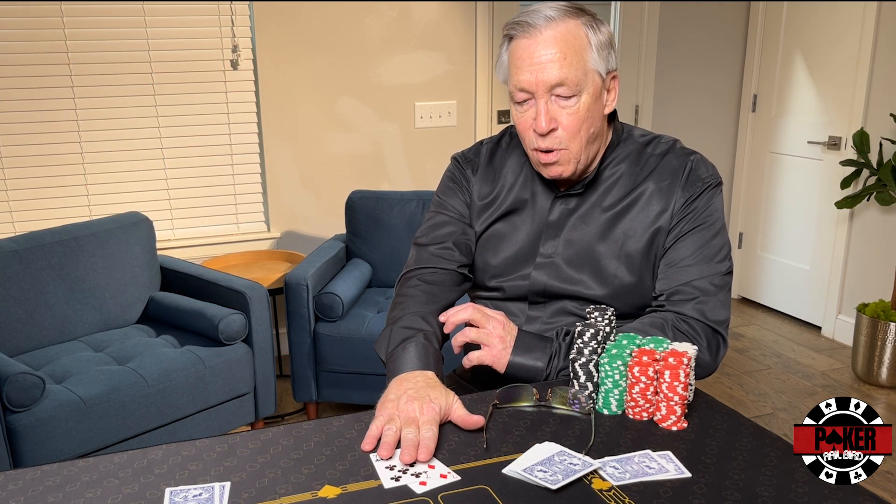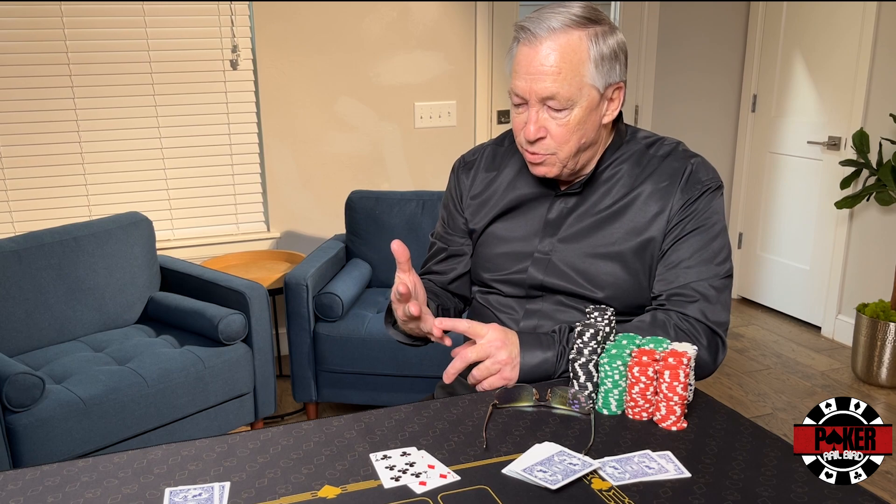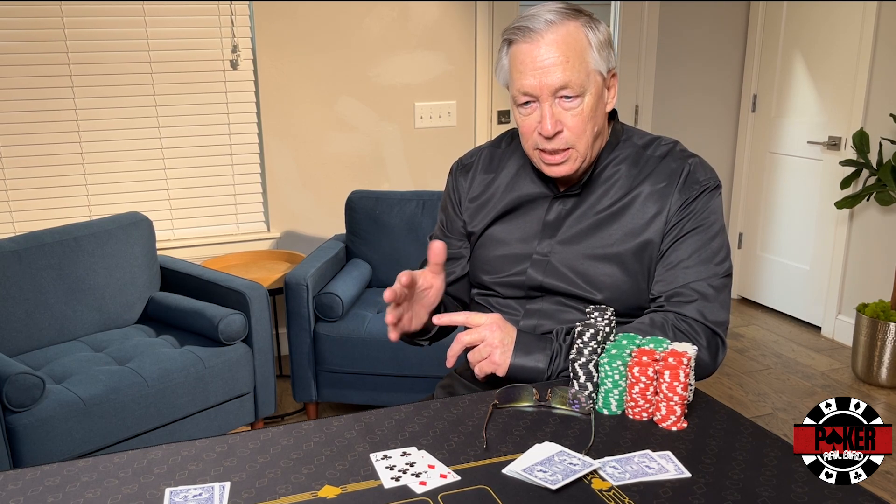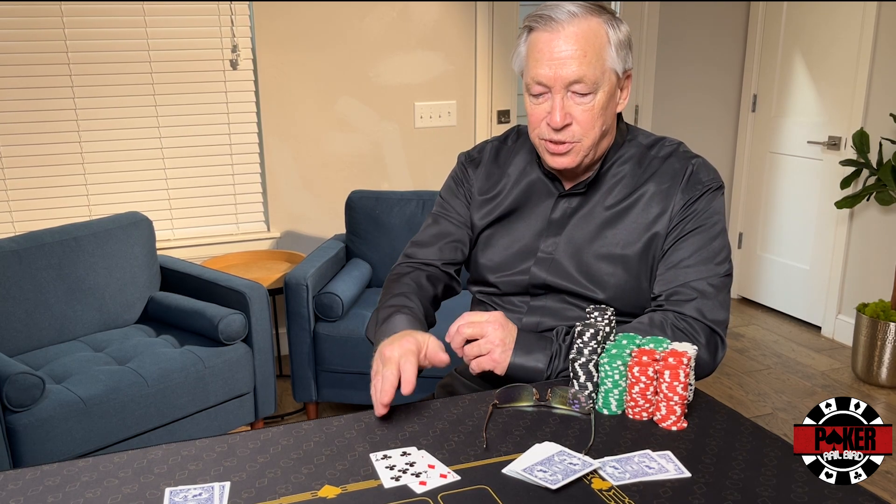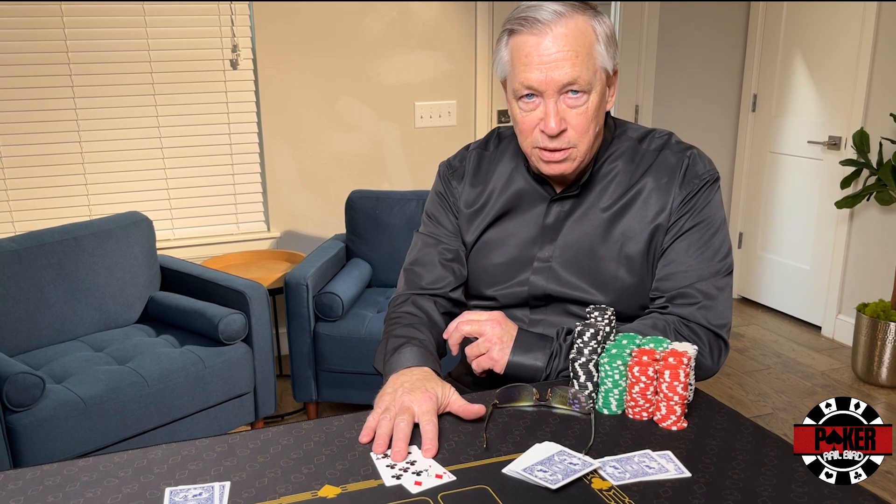If we had pocket tens, what would it be? Well, it's jacks, queens, kings, aces - four pairs. Four times nine is 36, which would be an 18 percent chance of an overpair.